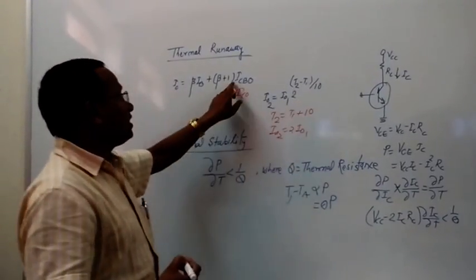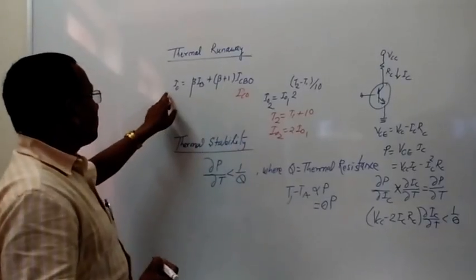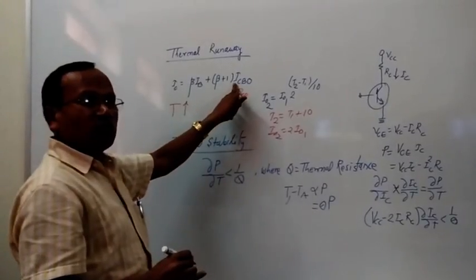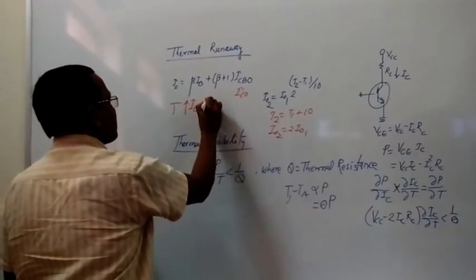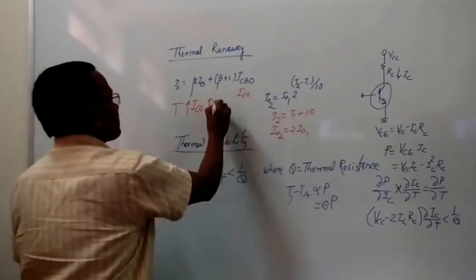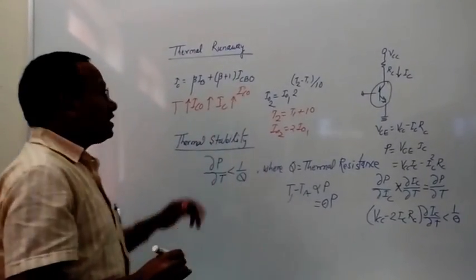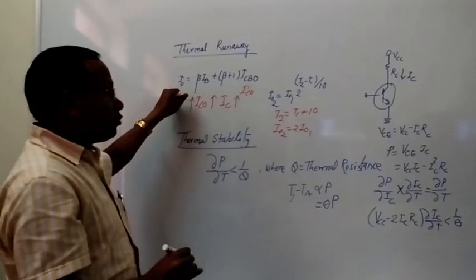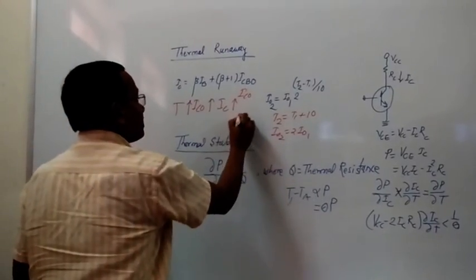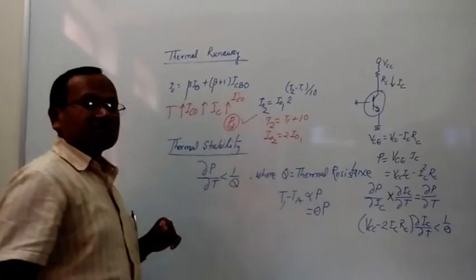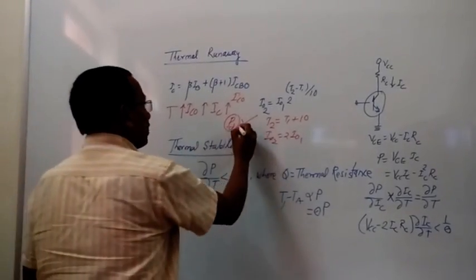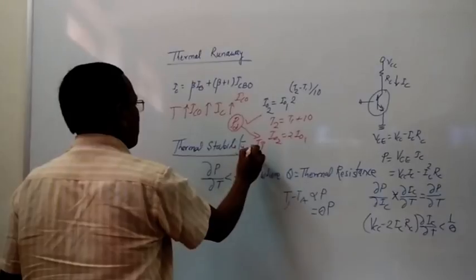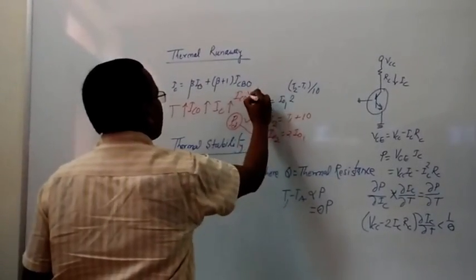The same effect of temperature applies to the collector current. When temperature increases, ICBO increases. When ICBO increases, IC increases. When IC increases, power dissipation in the collector region will definitely increase. And once power dissipation increases, that will further increase the junction temperature.